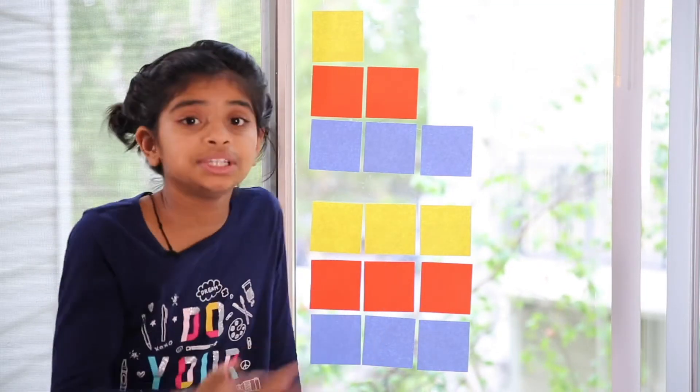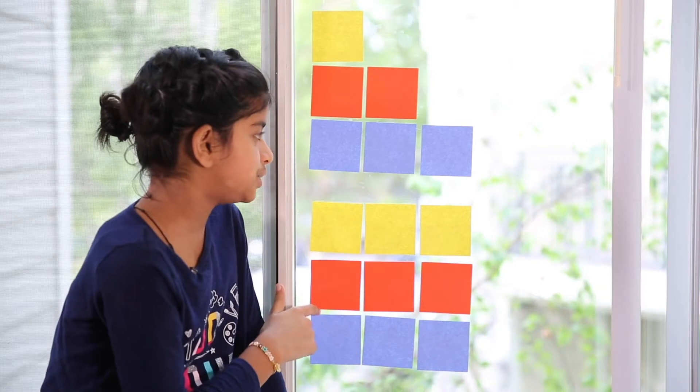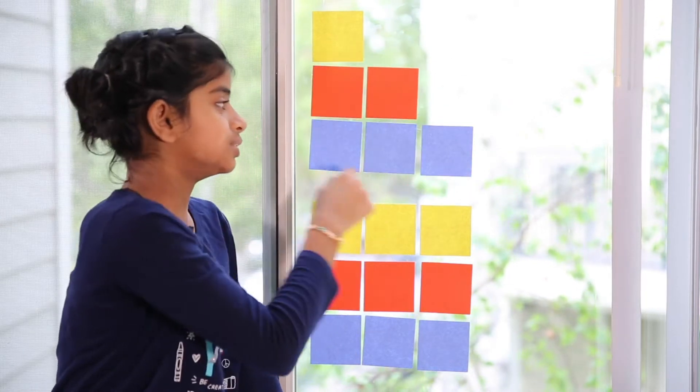Shape number 2 is a square. So we can simply do 3 times 3. That'd be 9. So there are 9 sticky notes in this shape and 6 sticky notes in this shape.